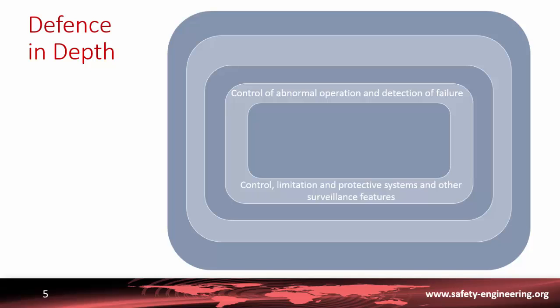The second level aims to monitor the system and control the development of any abnormal operation and detection of failures. This is done through extensive instrumentation and surveillance features in order to control various transitions and, in some cases, to include operational limitations.